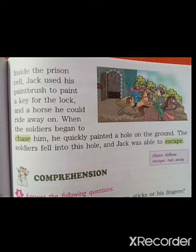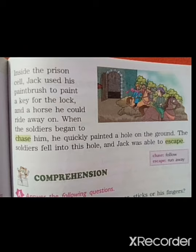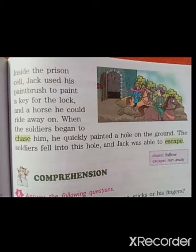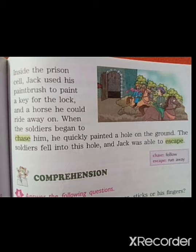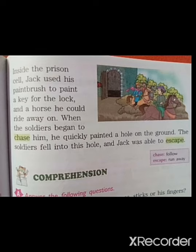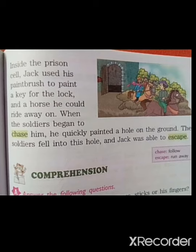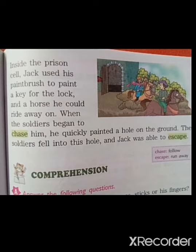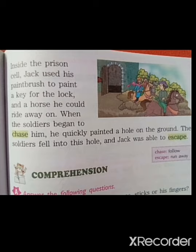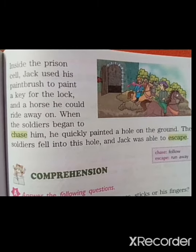Inside the prison cell, Jack used his paintbrush to paint a key for the lock and a horse he could ride away on. When the soldiers began to chase him, he quickly painted a hole on the ground. The soldiers fell into the hole, and Jack was able to escape. That was today's lesson: The Magic Paint Brush. Read it twice for homework. Okay, read it two times.